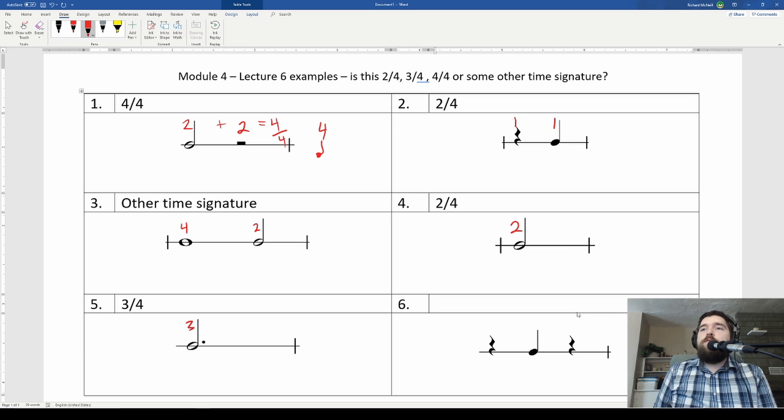All right, and our last one we have one beat, one beat, one beat. So 1 plus 1 plus 1 is 3. So this one is also a 3/4 time signature.